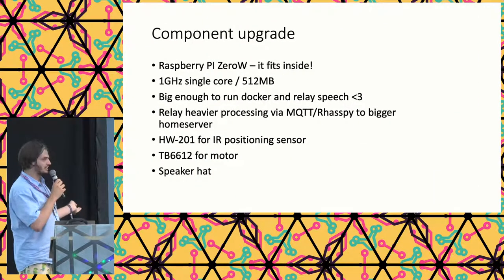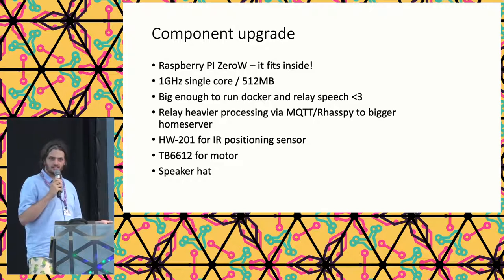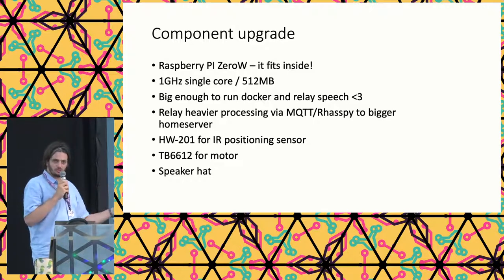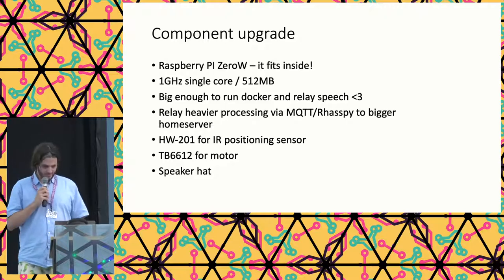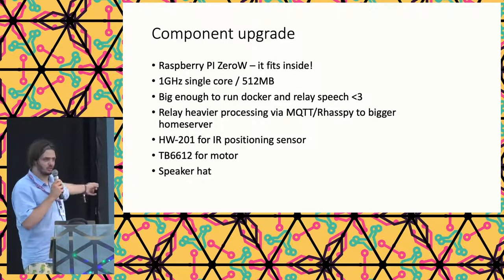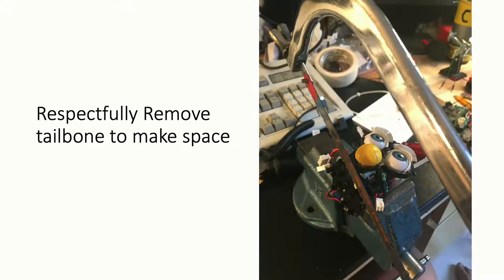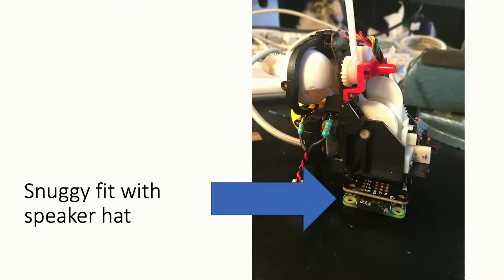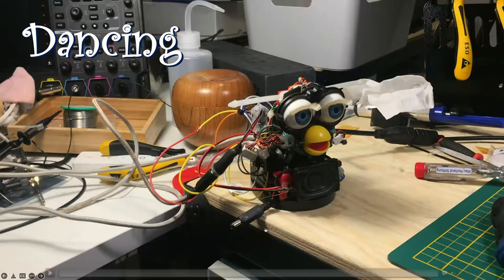I'm going to put a Raspberry Pi in there — it fits inside quite well. It's powerful enough to run a Docker container and can be used as a wake word trigger or relay speech-to-text to another server. I also have everything on GitHub. To make space for the Raspberry Pi I removed a little piece on the bottom by cutting it off with a saw, very gently, and now it fits really well with the Raspberry Pi and a speaker hat. So now it can do some dancing.